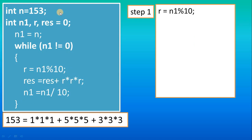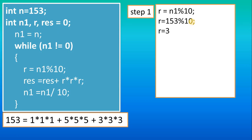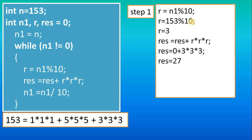Before the while loop we declare n1 = n, so n1 is now 153. The condition is n1 not equals to 0 — since 153 is not zero, these three statements repeat. Step 1: r = n1 % 10, that is 153 % 10, so r gets the remainder value, which is 3. We then calculate r cubed and assign it into res — where res was 0 — so res becomes 27.